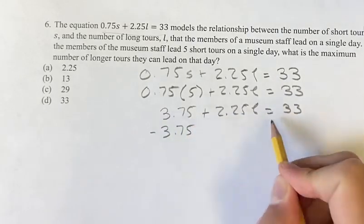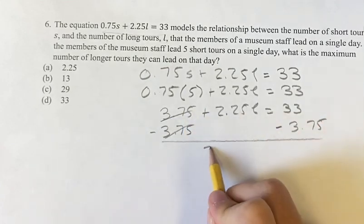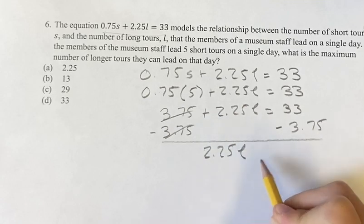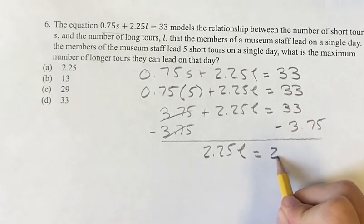Subtracting 3.75 from both sides, this cancels out and we get 2.25l is equal to 33 minus 3.75, which is 29.25.